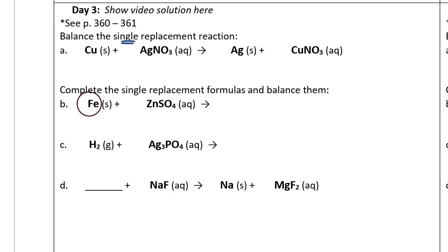Question B. Complete the single replacement formulas and balance them. We have iron plus zinc sulfate produces, and then notice how the product is left blank. It's left for us to fill in. So if this is a single replacement reaction, what's going to happen is the iron and the zinc will switch places. So the zinc becomes the solid metal, and the iron is going to bond to the sulfate, creating iron sulfate.